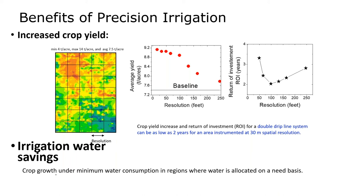One question people ask is: what is the optimal spatial resolution to target? Should we go to the individual plant level, or is there an optimum size? There's a trade-off between how much you spend on technology to adjust irrigation at the individual plant level versus the expected yield increase. Applying variable rate management increases yield up to a certain point, but then it starts to plateau.